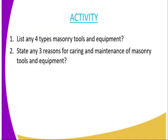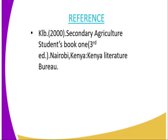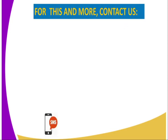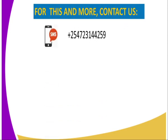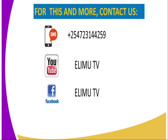We have come to the end of today's lesson. Your assignment: question one, list any four types of masonry tools and equipment; question two, state any three reasons for caring and maintenance of masonry tools and equipment. For reference, use the Secondary Agriculture Student Book 1, published by the Kenya Literature Bureau. For more information, reach us at Elim TV via SMS, YouTube, Facebook, or Twitter at Elim TV underscore KE. Thank you for joining me. Until next lesson, bye bye.